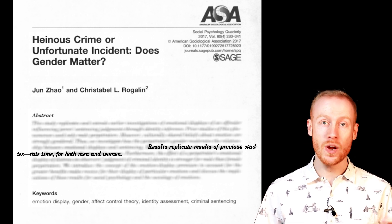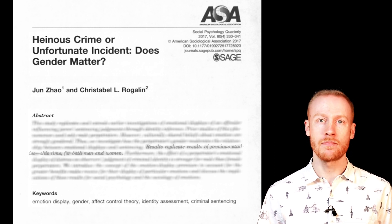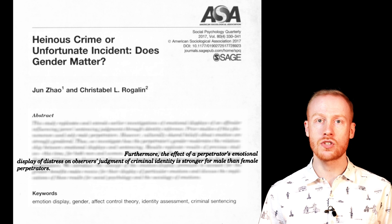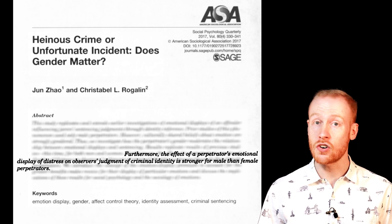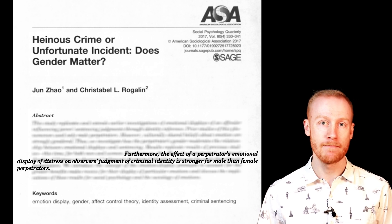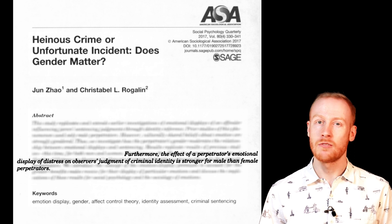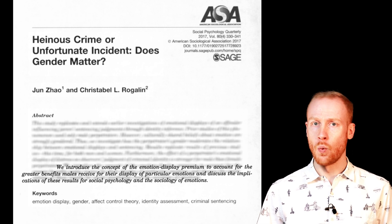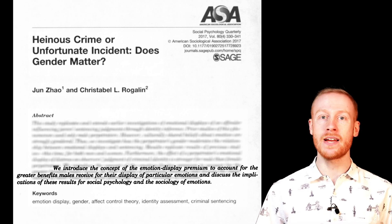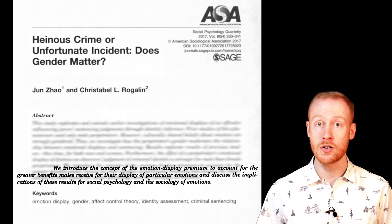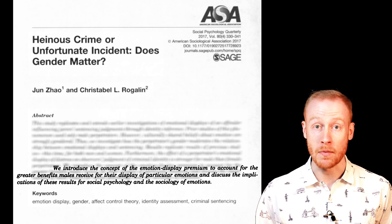Spoiler alert! We know up front what the headline result is: 'Results replicate results of previous studies, this time for men and women.' For a little more detail, the authors continue: 'Furthermore, the effect of a perpetrator's emotional display of distress on observers' judgment of criminal identity is stronger for male than female perpetrators.' So now we know that a gender bias was found. But what can we do with this new information? 'We introduced the concept of the emotion display premium to account for the greater benefits males received for their display of particular emotions, and discussed the implications of these results for social psychology and sociology of emotions.'